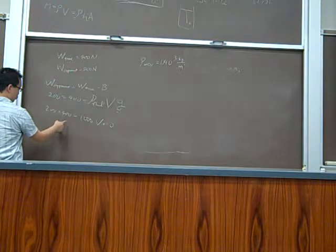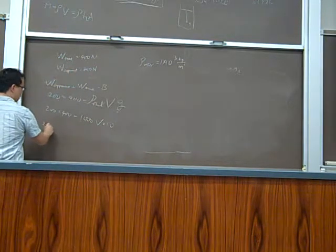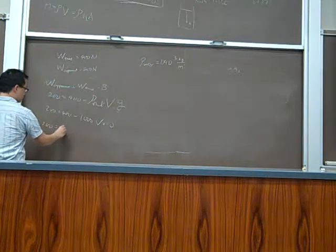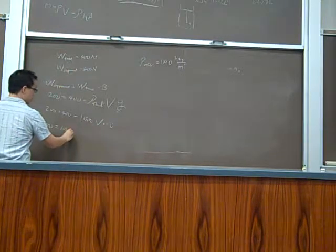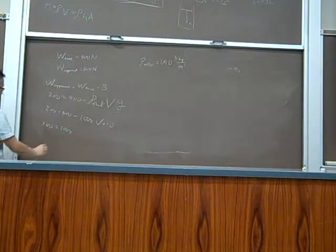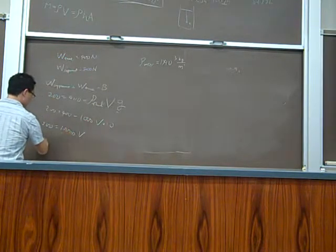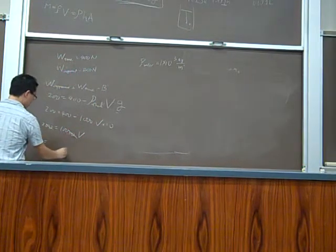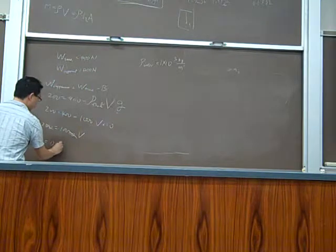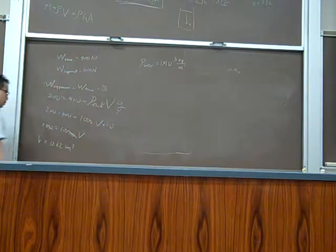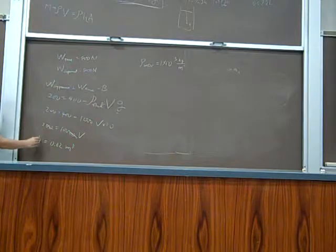So V equals to 200 equals to 0.02 meter cubed. So that's the volume.